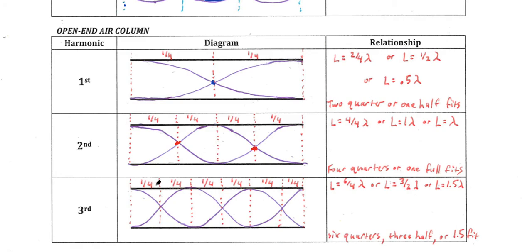In a third-order harmonic for open-ended air columns such as a flute, we just continue to add more nodes. There was one node in the first harmonic, two in the second, now there are three nodes. How do we get from an antinode to another antinode with three nodes in between? We've got more quarters of a wave thrown into the diagram. There are six quarters of a wavelength — so the length of this tube fits six quarters, or equivalently three halves of a wavelength.